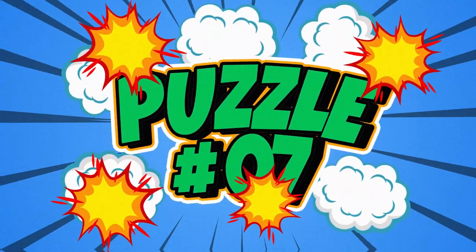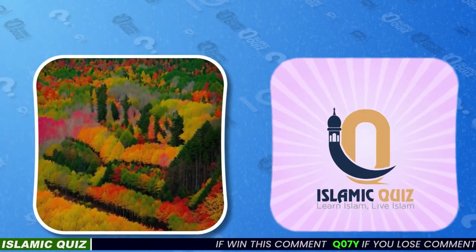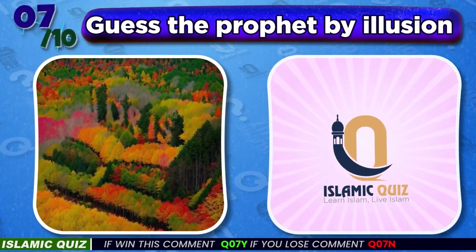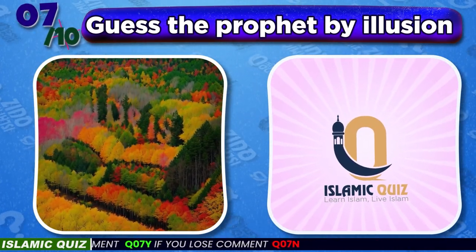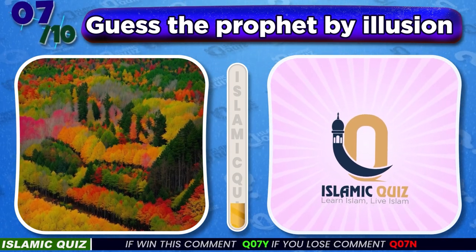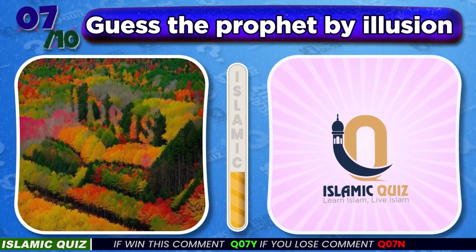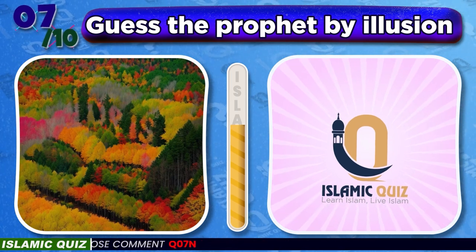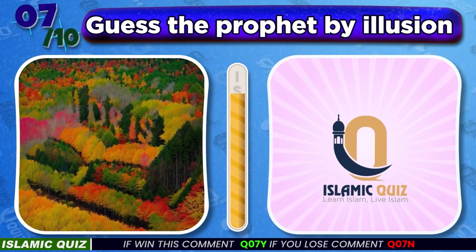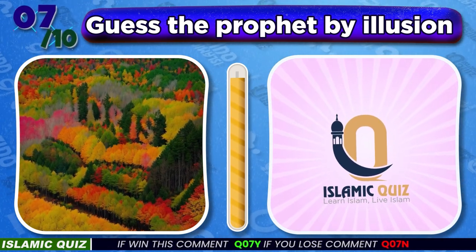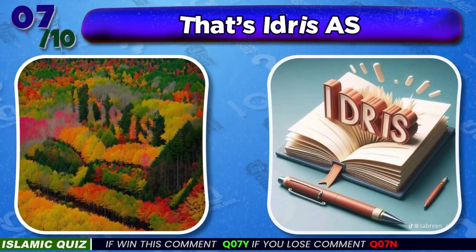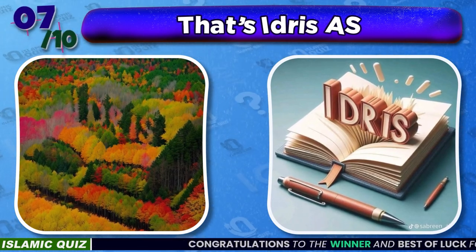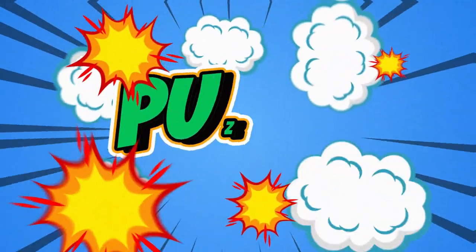Quiz No. 7: Which prophet appears in this optical illusion? That's Idris alayhi salam.